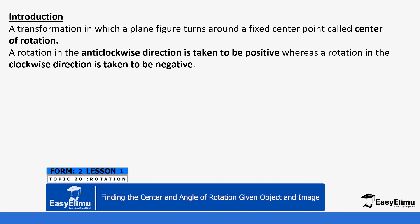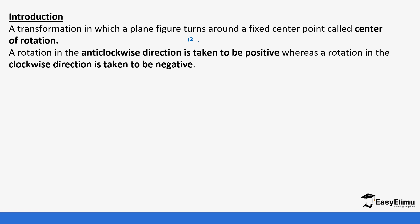A rotation in the clockwise direction — like a wall clock where the big hand moves from 12 to 1 to 2 to 3 — is taken to be negative. The rotation in the anticlockwise direction is taken to be positive. It's a common misconception that clockwise is positive and anticlockwise is negative — it is the other way around. If it's clockwise it's negative; if it's anticlockwise it's positive. Always remember that.